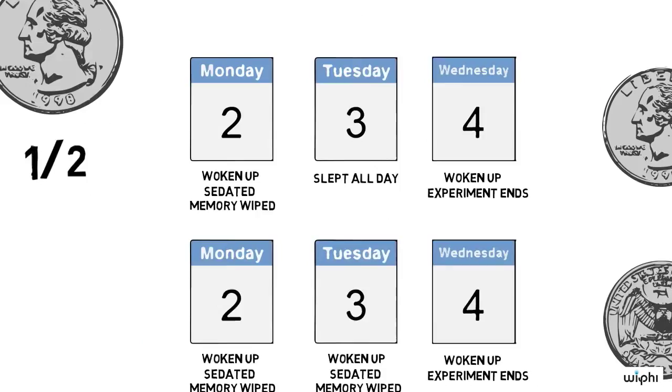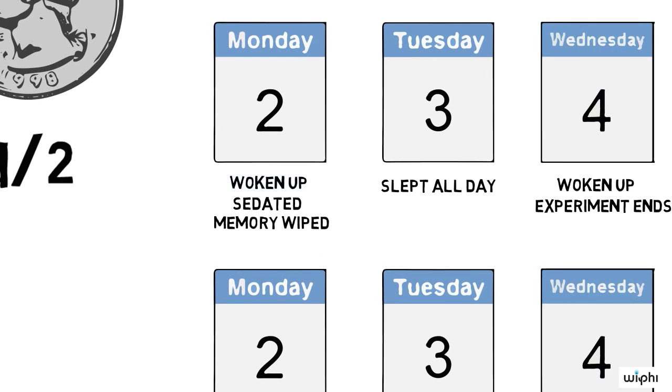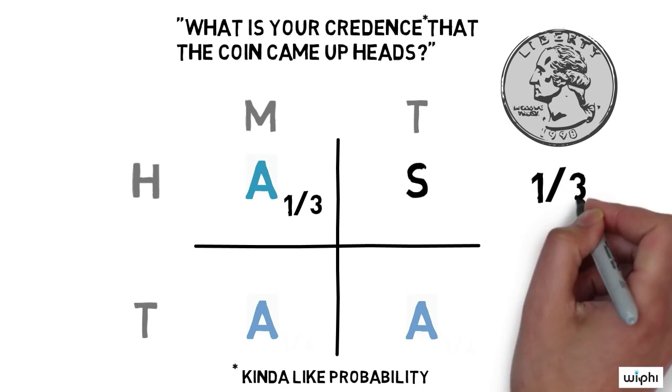Remember, sleeping beauty doesn't know the result of the coin toss or whether she's been woken up beforehand. So the answer to the question what probability should sleeping beauty assign to the coin having come up heads when she's woken up is one third. In that case, we can write one third in each of these awake boxes.